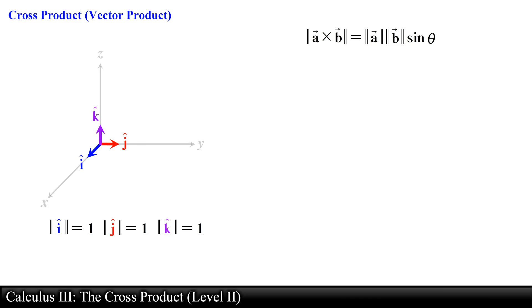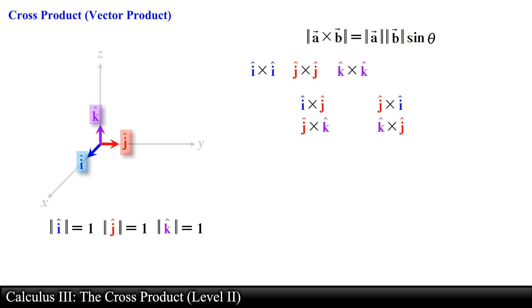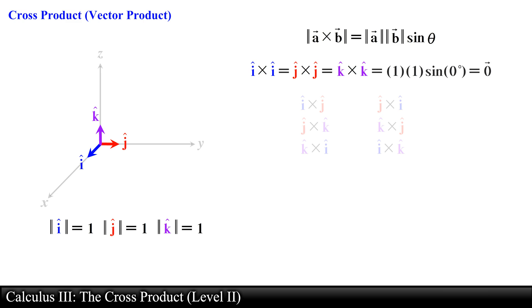Let's use the geometric definition to find the cross product of all the possible combinations between the unit vectors, which include i hat cross i hat, j hat cross j hat, k hat cross k hat, i hat cross j hat, j hat cross k hat, and k hat cross i hat. The vector product of any vector with itself is equal to the zero vector, so i hat cross i hat, j hat cross j hat, and k hat cross k hat will all be equal to the zero vector.